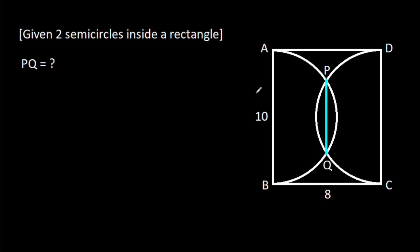In this video, we have been given that ABCD is a rectangle and AB is 10, BC is 8. Then we have to find PQ.